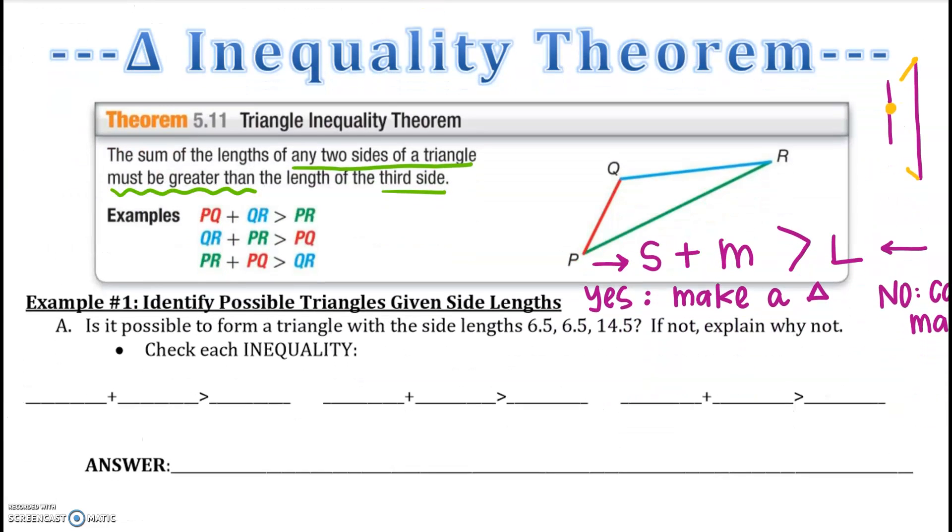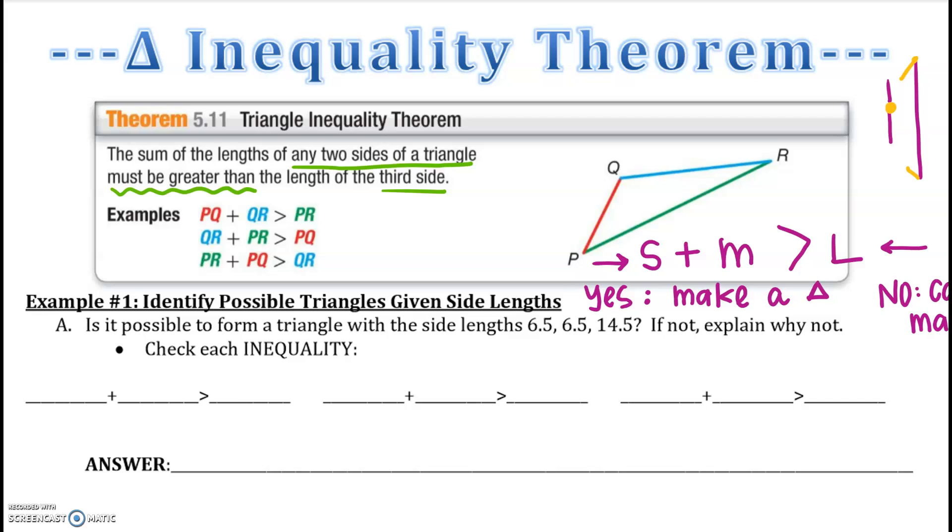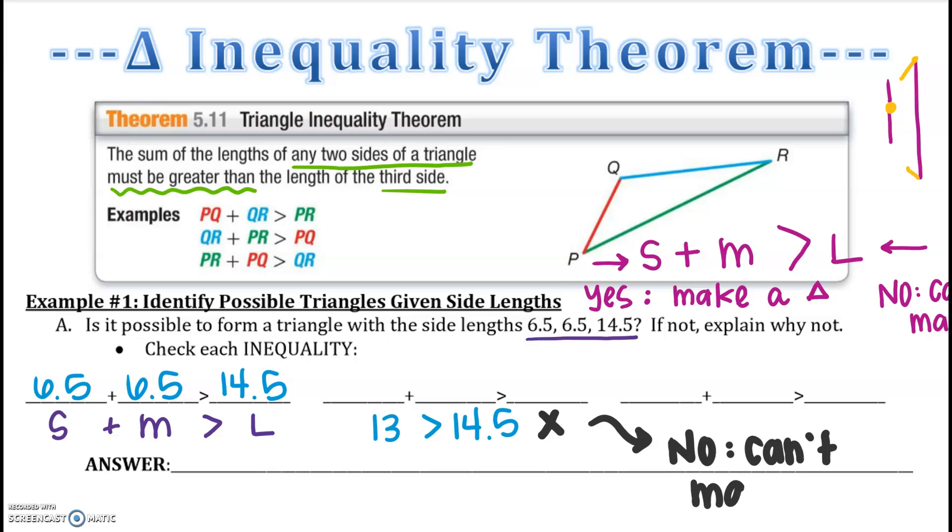Here's some examples. Is it possible to form a triangle with the side lengths of 6.5, 6.5, and 14.5? The first time you're going to say, is my small plus my medium greater than my longest side? So I'm going to add 6.5 plus 6.5 must be greater than 14.5. When I add those two together, I get 13 is greater than 14.5. That is a false statement. So because that is not true, I have to say no, can't make a triangle.